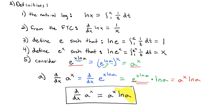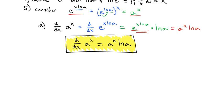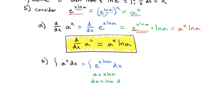Before, we just stated it and claimed it. Now we have formally proved it. We can similarly calculate the integral of a to the x dx, since that's the same as the integral of e to the x·ln(a) dx. Using u-substitution, we let u equal x·ln(a), so du is the natural log of a dx, because ln(a) is just a constant. We multiply inside by ln(a) and outside by 1 over ln(a), giving us 1 over ln(a) times the integral of e to the u du.